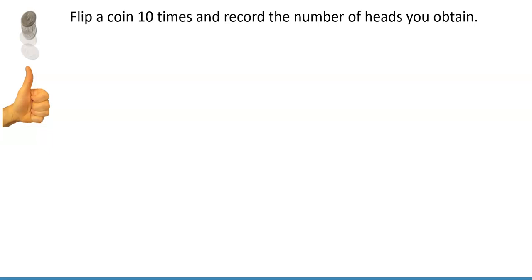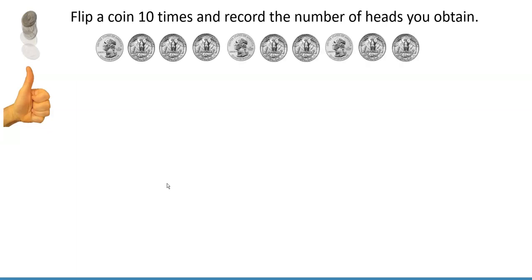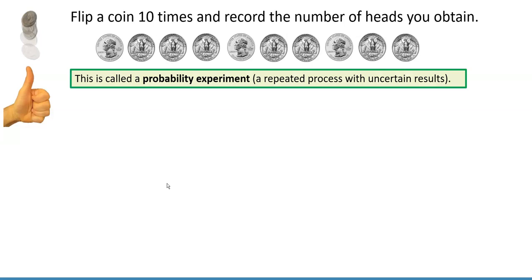Suppose that you need to flip a coin 10 times and record the number of heads you obtained. What kind of result are you expecting to see? Would you expect that outcomes will go back and forth between heads and tails? Probably not. We will get something like this. In this example, we have three heads and seven tails. What we just looked at is called a probability experiment.